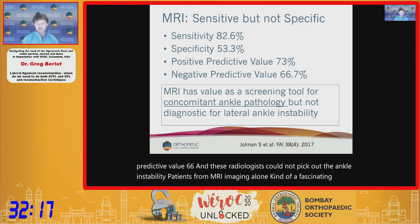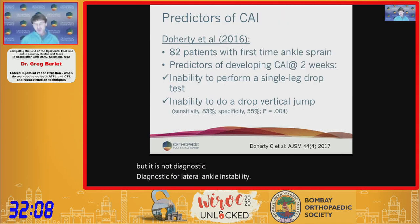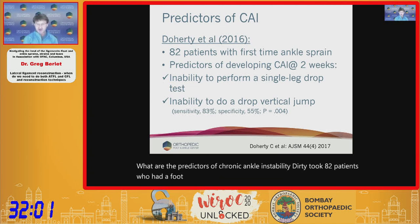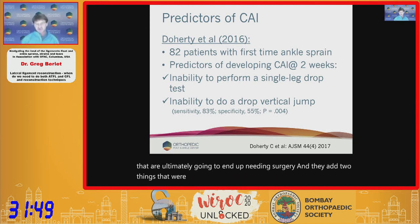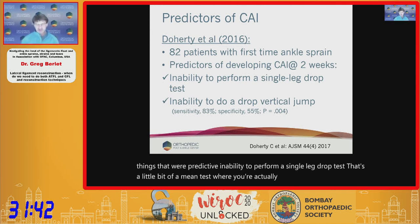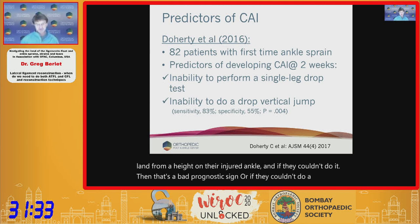MRI has value as a screening tool for associated ankle pathology but is not diagnostic for lateral ankle instability. Doherty studied 82 first-time ankle sprain patients to identify at two weeks who would ultimately need surgery. Two factors were predictive: inability to perform a single-leg drop test — landing from a height on the injured ankle — and inability to perform a drop vertical jump, though these are somewhat impractical clinical tests.